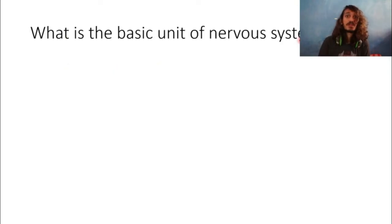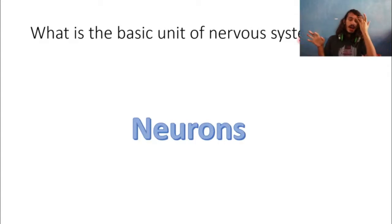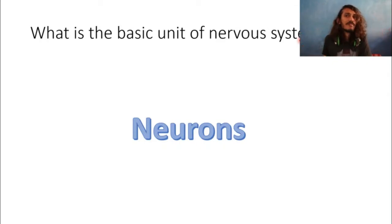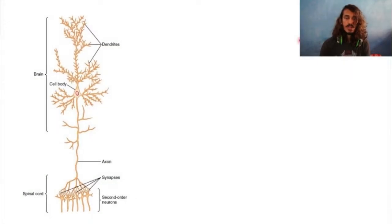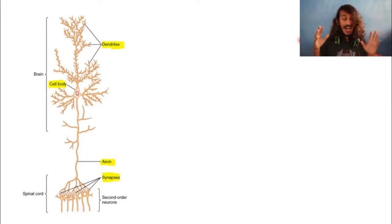What is the basic unit of the nervous system? The basic unit of the nervous system is the neuron. We have many neurons and all these neurons are interconnected — it's like a whole web of interconnected structures. We have the central nervous system and the peripheral nervous system, with neurons everywhere. A neuron has a dendrite, a cell body or soma, and an axon, and it connects to other neurons through synapses.